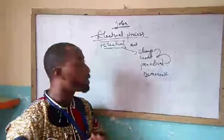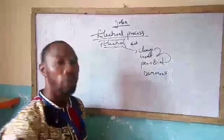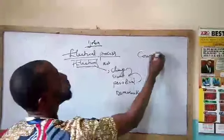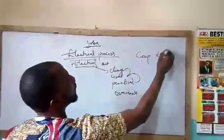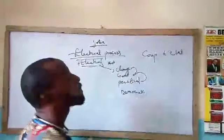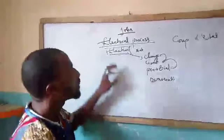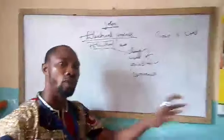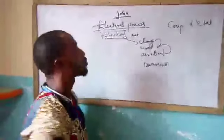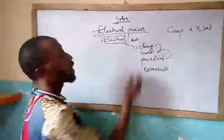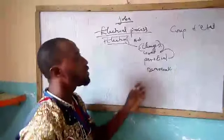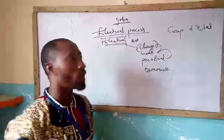In military rule, there is nothing called election. The only thing that takes place in military rule is referred to as a coup d'état. But in the democratic setting where civilians rule the people or the subjects, what takes place is referred to as election. So that is why we say election is a concept of change — change of government periodically.